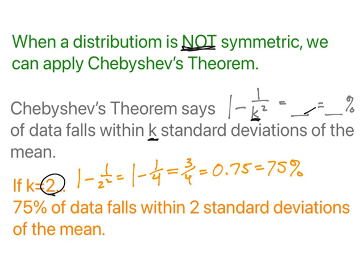So if we want to know about two standard deviations from the mean, k would be 2. We'd have 1 minus 1 over 2 squared, which is 1 minus 1 fourth, which gives me 3 fourths, 0.75. That's 75% of data falls within two standard deviations of the mean. That's what Chebyshev's theorem says.